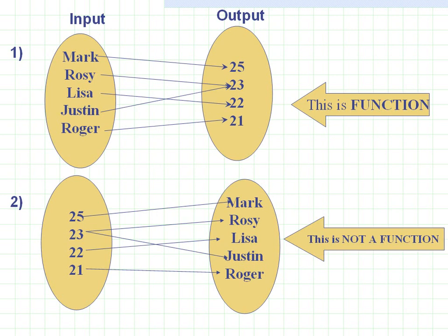Now in Case 2, when we change the input from name to age: by putting in 25 as input we get the output Mark, but for 23 we are getting two outputs, which does not satisfy the condition for a function. So that means this is not a function.